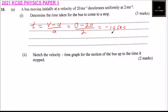You ignore the negative sign. So you say it is 10 seconds. It is equal to 10 seconds. So, part number 2, sketch the velocity time graph for the motion of the bus up to the time it stopped.